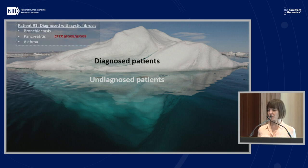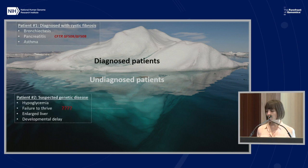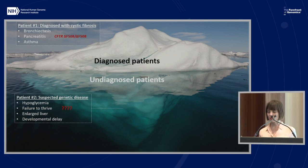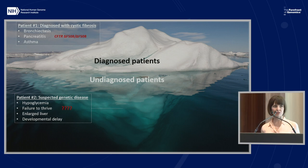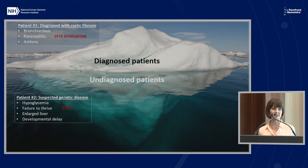Among diagnosed patients, you'll see ones like this — a patient who's diagnosed with cystic fibrosis and really has the classical manifestations of the disease and has been found to have two copies of Delta 508. But then you also have patients in a clinical population that look like this one. This patient was born with severe problems with hypoglycemia, was later found to have failure to thrive and large liver and other features that cause clinicians to think he may be suffering from a genetic disorder. However, a typical clinical test didn't reveal any specific diagnosis.